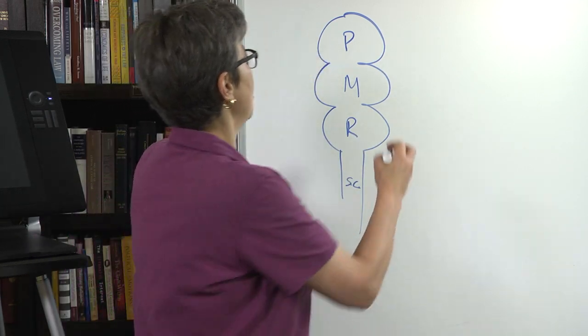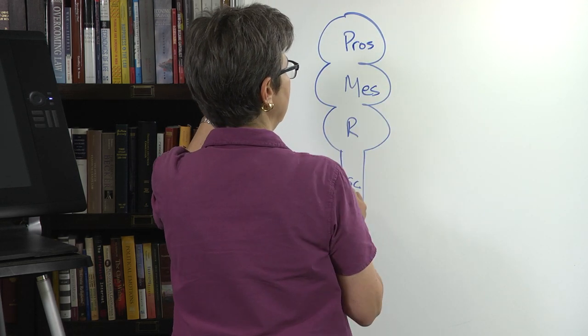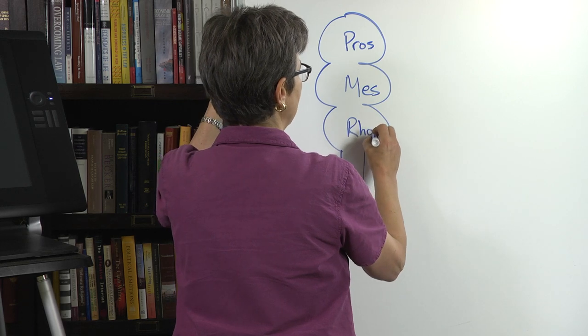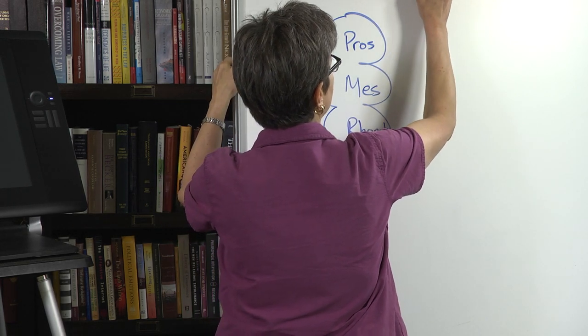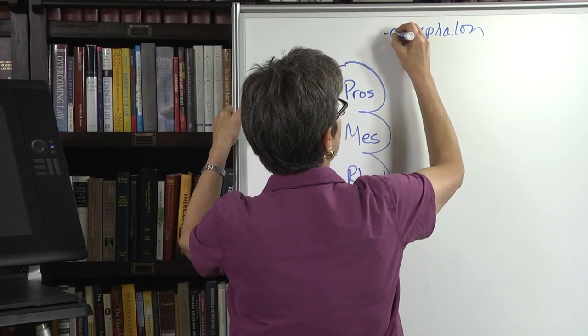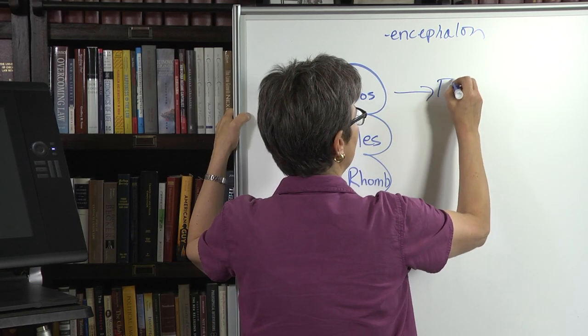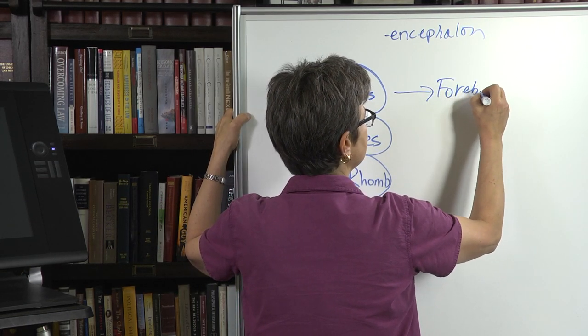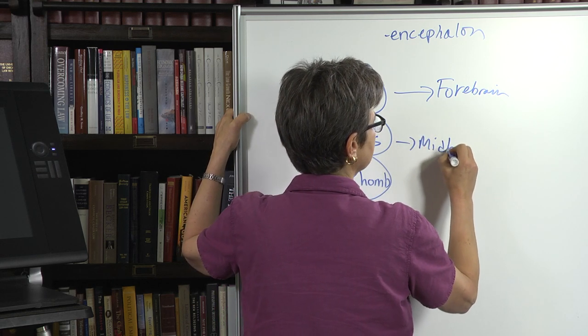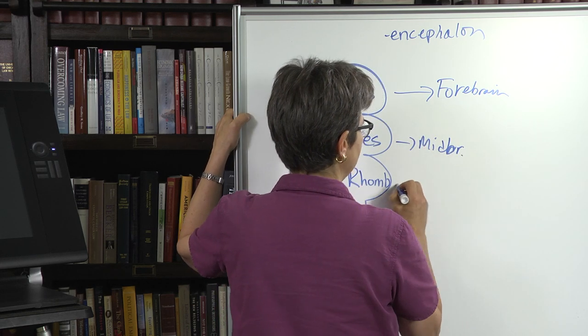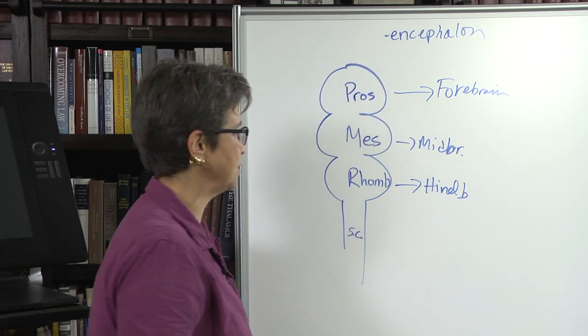This is called the prosencephalon, this is the mesencephalon, and this is the rhombencephalon. The prosencephalon is going to become the forebrain, the mesencephalon becomes the midbrain, and the rhombencephalon becomes the hindbrain.